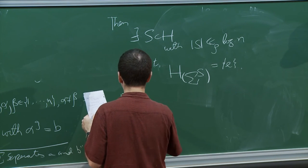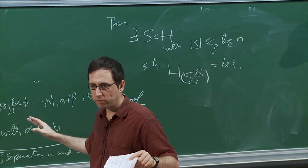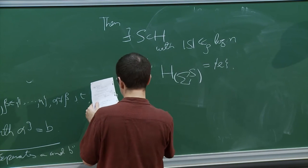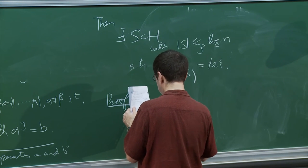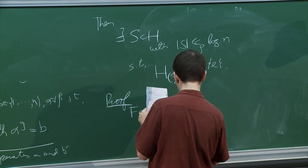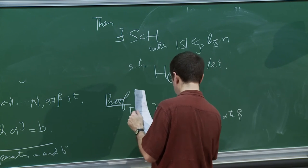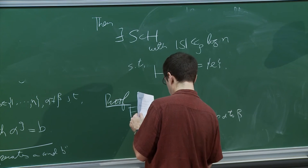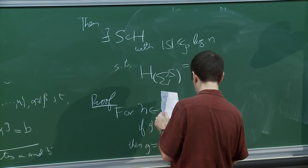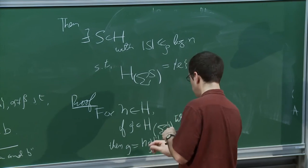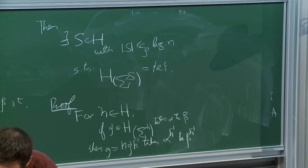The conclusion: there exists a sigma_h — a sigma in H — of logarithmic size, such that the point-wise stabilizer with respect to sigma to the S is trivial. How do you prove that? If g' takes alpha to beta, then h·g'·h^{-1} takes alpha^{h^{-1}} to beta — that's a tautology, like all of math.